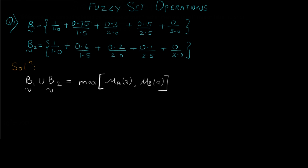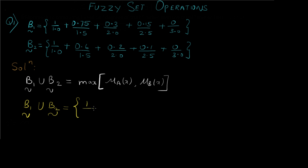According to the formula, the answer of B1 union B2 is calculated as follows. We compare the first terms: we have 1 and 1, so the maximum is 1, and we write the lower value as it is. Remember, we do not change any values from the denominator — all operations are performed on the upper value or degree value. So we get 1/1.0 as the first term. For the second term, we compare 0.6 and 0.75 — the maximum is 0.75, so we write it as is.